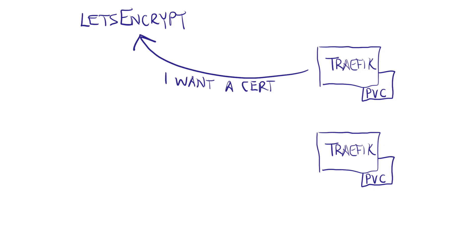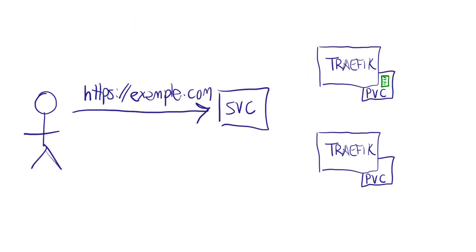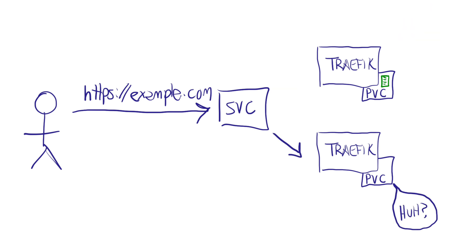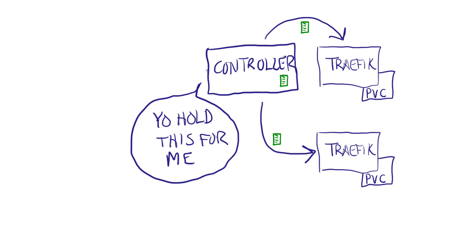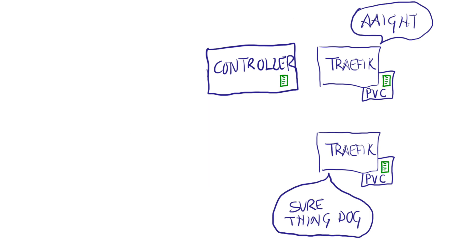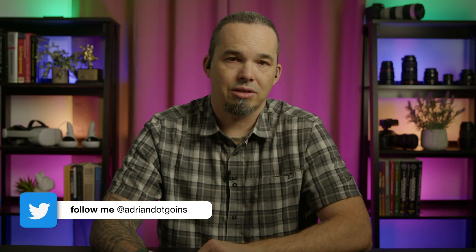The one place that Traefik falls short in this scenario is with its Let's Encrypt integration. Traefik expects you to have local storage attached to the pod, and this creates issues with running multiple copies of Traefik for HA. Each of them has its own file system with certs stored locally, and there's no way to share that information. Traefik Enterprise solves this with a controller that distributes certificates between proxy instances, but we're only using Traefik proxy in this demonstration. So how do we solve it? It's easy — we just use cert-manager to generate the certificates.